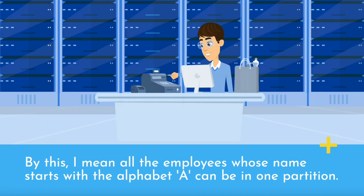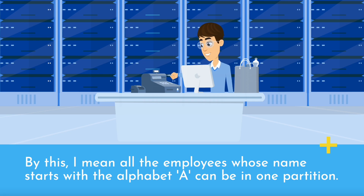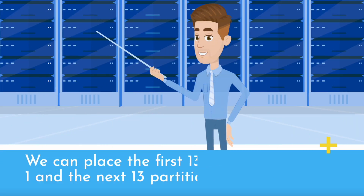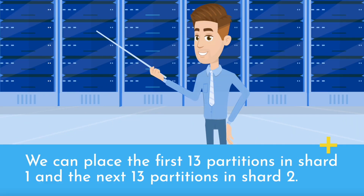By this, I mean all the employees whose name starts with the alphabet A can be in one partition. Similarly, all the employees whose name starts with B can be another partition, and so on. Since there are 26 alphabets, we would have 26 partitions. We can place the first 13 partitions in shard 1 and the next 13 partitions in shard 2.